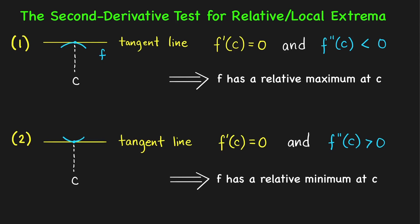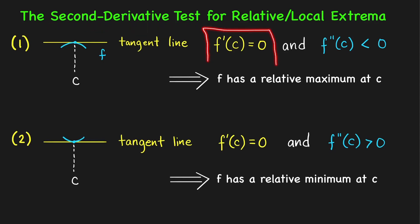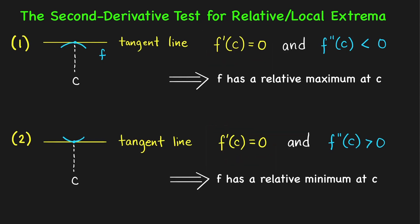If you're going to apply the second derivative test, there will be a restriction. We don't consider all critical numbers of f — we only consider the critical numbers where the derivative is equal to 0. That means we're considering only critical numbers where the tangent line is a horizontal tangent line, so the slope of the tangent line is equal to 0.